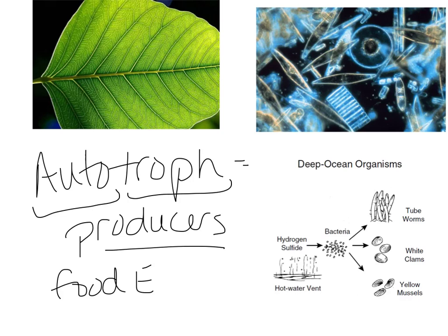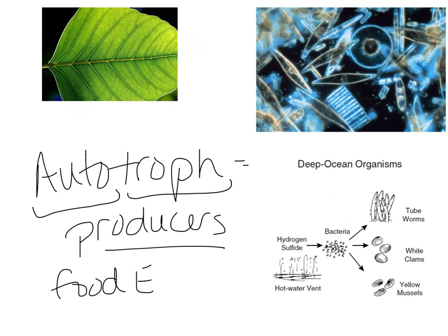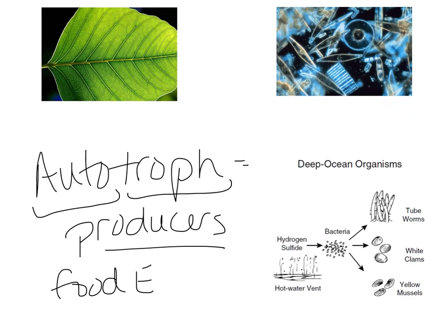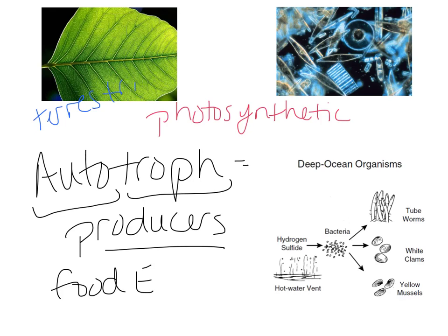There are a couple different kinds of producers. We have photosynthetic producers versus chemosynthetic producers. Up top, we have pictures of photosynthetic producers. I've got a terrestrial plant — that's my land producer. On land, most producers are obviously going to be plants, and they are photosynthetic, using light energy and converting it into chemical food energy.